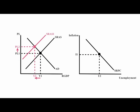When the short-run aggregate supply curve shifts to the left, price levels go up and real GDP goes down. This brings inflation and unemployment up, which shifts the short-run Phillips curve to the right.